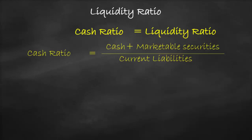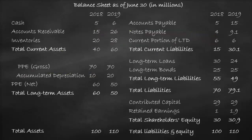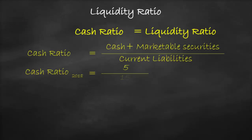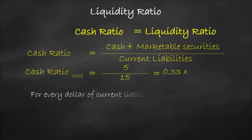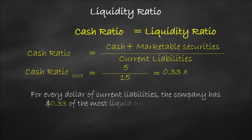So let's calculate the cash ratio for the year 2018. Cash is equal to $5,000,000 plus marketable securities, which in this example is 0, divided by current liabilities of $15,000,000, which is all equal to 0.33 times. The unit of cash ratio is times. This means that for every dollar of current liabilities, the company has $0.33 of the most liquid current asset items.